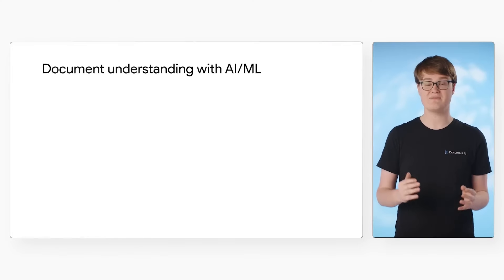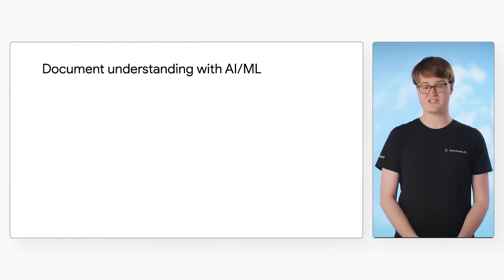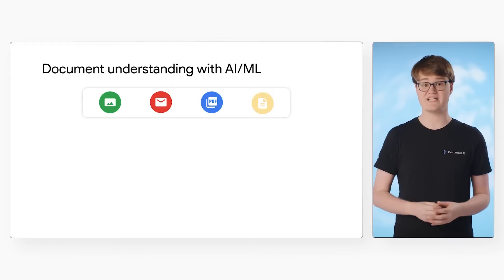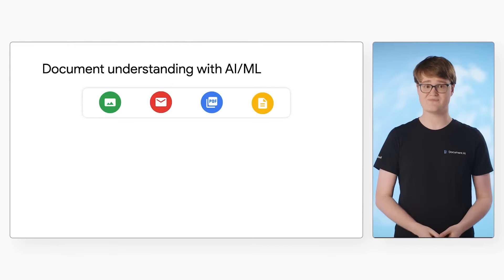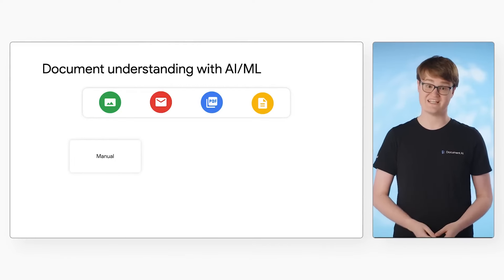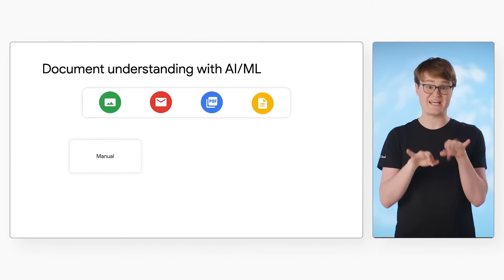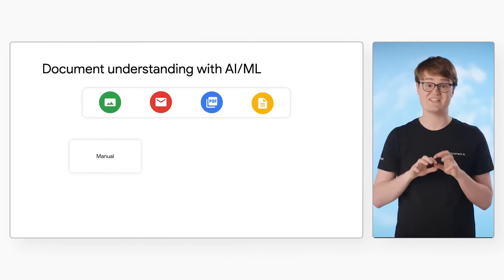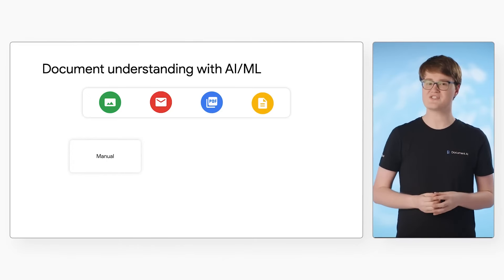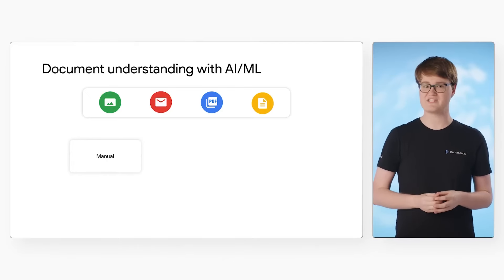Let's take a look at the ways companies can begin to structure this data. There are three methods currently used to extract data from documents. First, we have manual data entry. Humans read the documents and then manually enter the data they see into a system. This requires a significant time investment and is prone to mistakes.